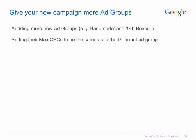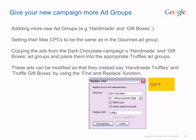In order to expand the campaign, in this example we add two new ad groups: Handmade and Gift Boxes. Their Max CPCs are set to be the same as in the Gourmet ad group. The ads are copied from the Dark Chocolate campaign's Handmade and Gift Boxes ad groups and pasted into the appropriate Truffles ad groups. These ads can be modified so that they instead say Handmade Truffles and Truffle Gift Boxes. Use Find and Replace by pressing Ctrl plus F. The same operation can be conducted with keywords.